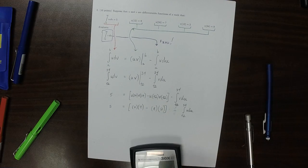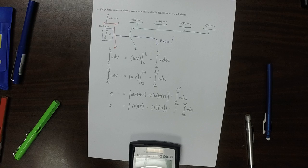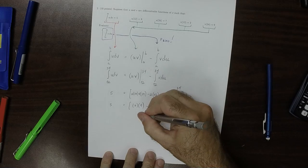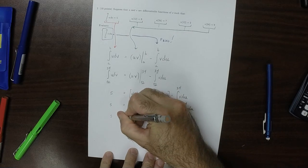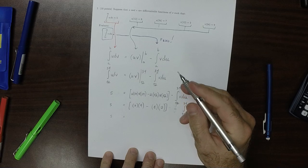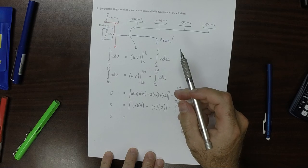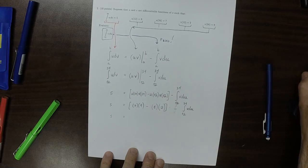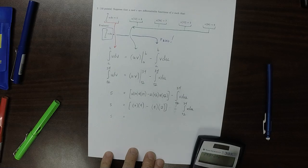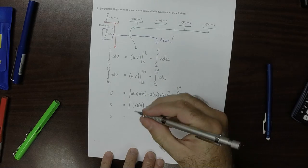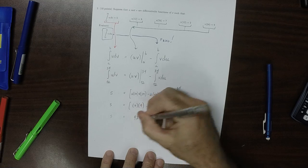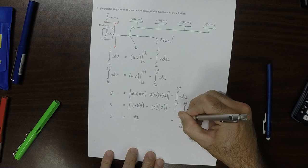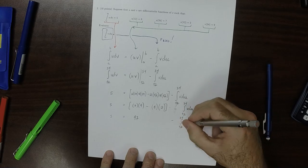So evaluating that in the square brackets there, that's 7 times 9 minus 8 times 2, that's 47. So 5 is 47 minus the integral. So 47 minus the integral of v du.